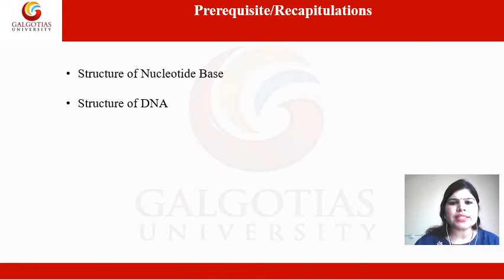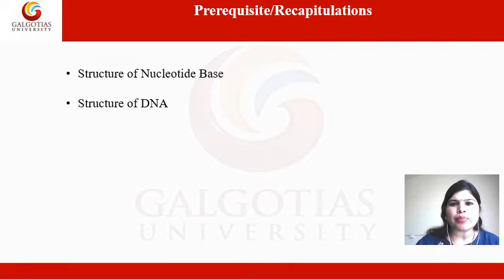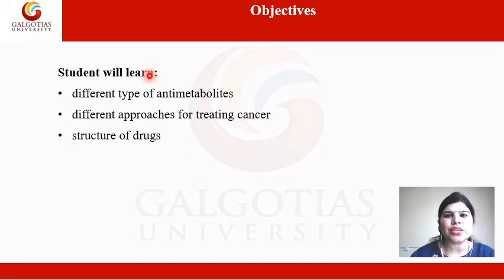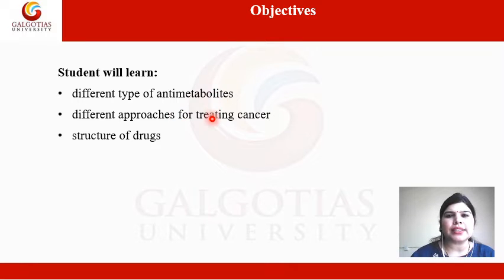Before we start this lecture, students must be aware about the structure of nucleotide bases. The student should also know the different types of bases, the structure of DNA, and the process of DNA synthesis. The objectives of today's lecture are: the student will learn the different types of antimetabolites, the different approaches for treating cancer using these antimetabolites, and the structures of these drugs.